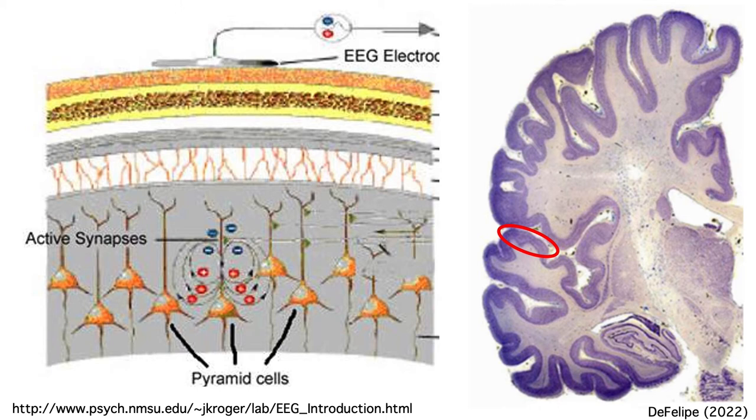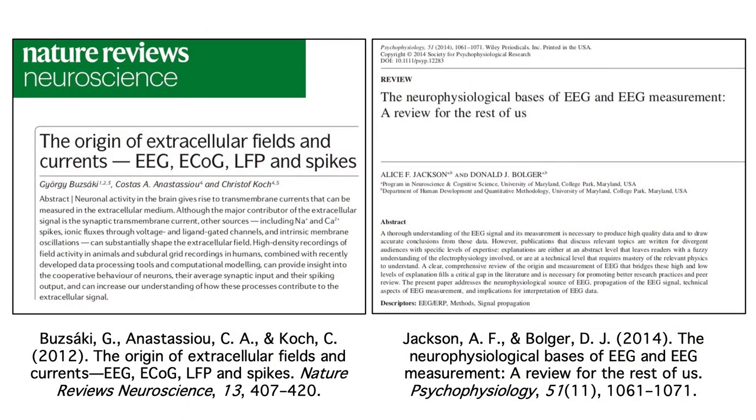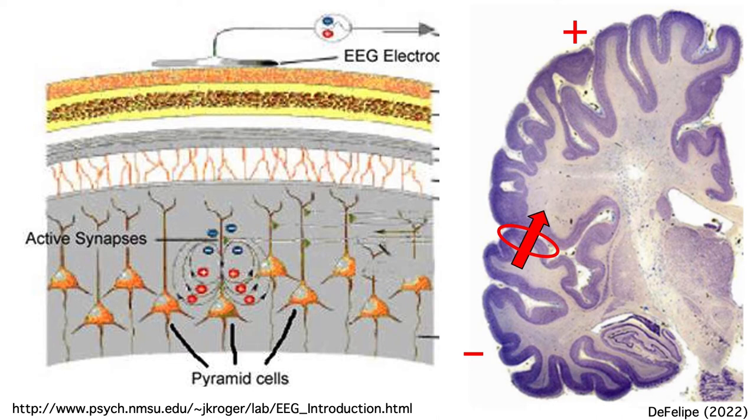The extracellular electric fields produced during neurotransmission sum across the neurons in an area, forming what we call an equivalent current dipole that points perpendicular to the active cortical surface. This will give us a negativity in our scalp EEG electrodes on one side of the dipole and a positivity on the other side. If you'd like more details, here are a couple of excellent review papers.